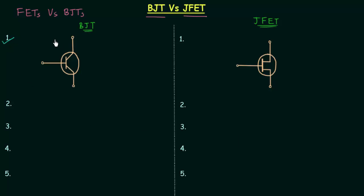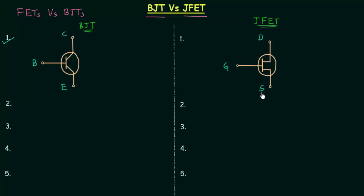In the first point we will see the symbols of the two devices. Both devices are three-terminal devices. The three terminals in case of BJT are the base terminal, collector terminal, and the emitter terminal. In case of JFET, the three terminals are the gate terminal, drain terminal, and the source terminal.